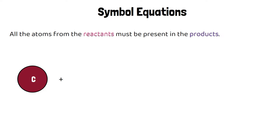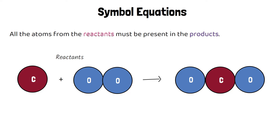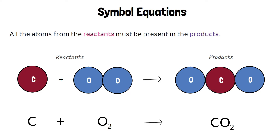Here I'm starting with one carbon atom and two oxygen atoms. These chemicals that I'm starting with are known as my reactants, and the chemical that I end up with is known as my product. I can write a symbol equation for this reaction: I'm starting with C plus O2 and I'm producing CO2.